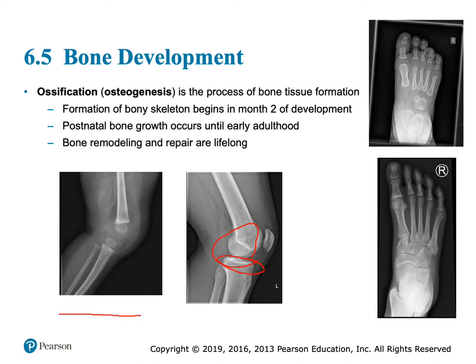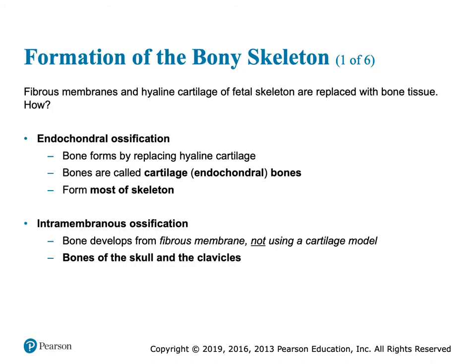We need bone development thanks to chondrocytes going through multiplication and certain cells in our bones that deposit osteoid, which hardens into bone. There are two different ways to do this ossification. One — the most common — is endochondral ossification. Most of our bones do this: we have a hyaline cartilage model and we replace it with bone. The other kind is not so common.